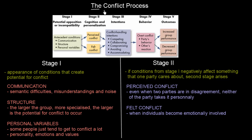Now we are getting to the conflict process. There is a nice model describing the conflict process and it consists of five stages. In this video we are going to talk about the first two stages. Stage one is the potential opposition or incompatibility, and the second one is cognition and personalization.